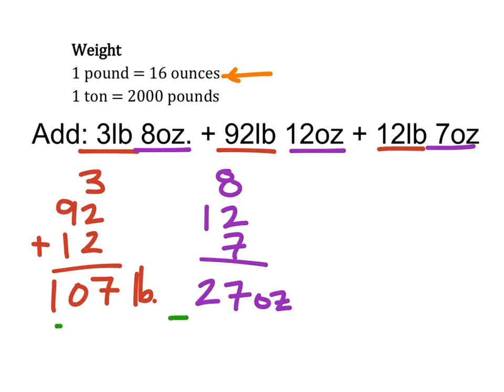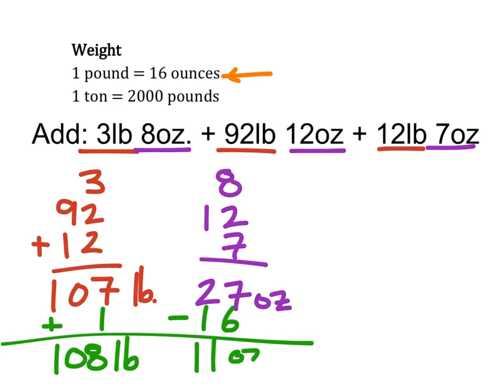pound out of the ounces and add that 1 pound to the pounds. So I'm going to subtract 16 ounces by adding 1 pound right there. So that now becomes 108 pounds, and 27 minus 16 is 11 ounces.